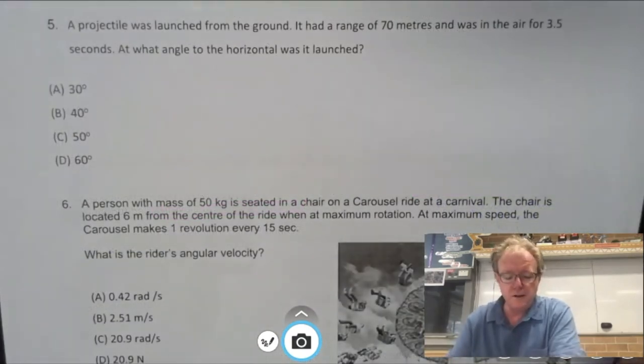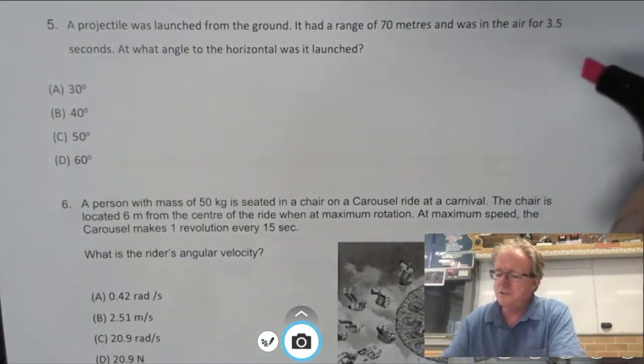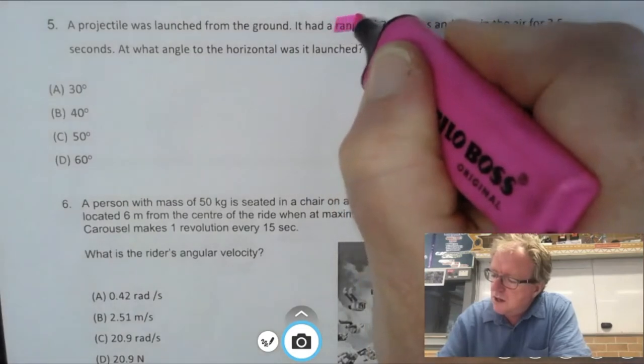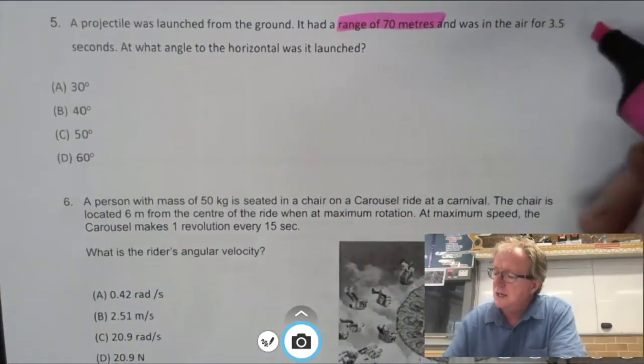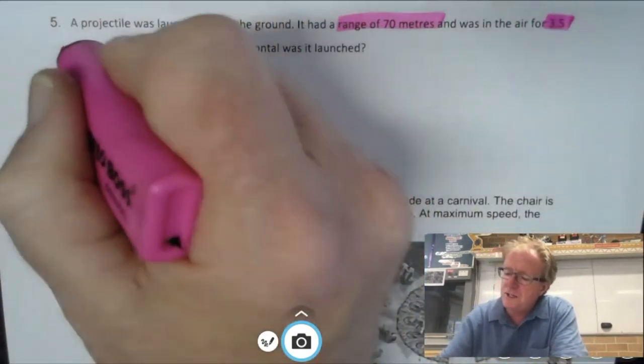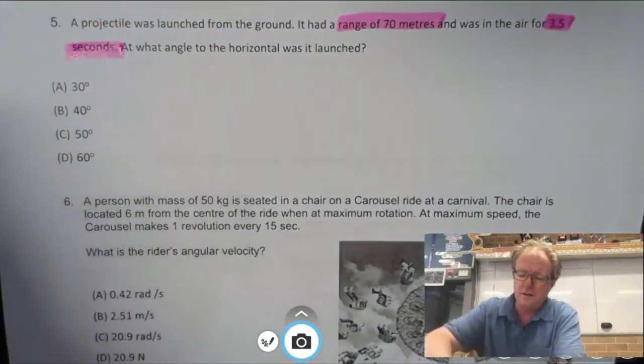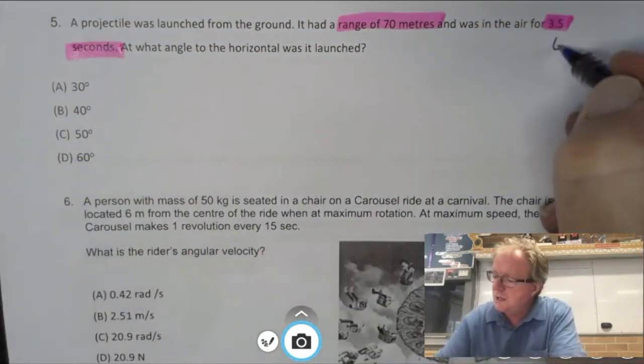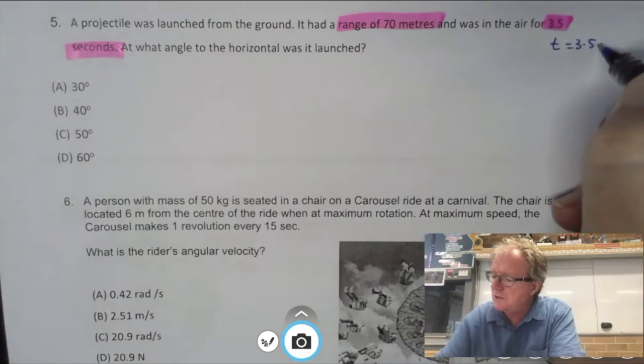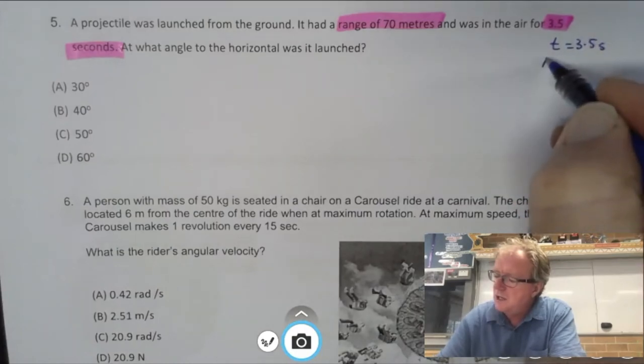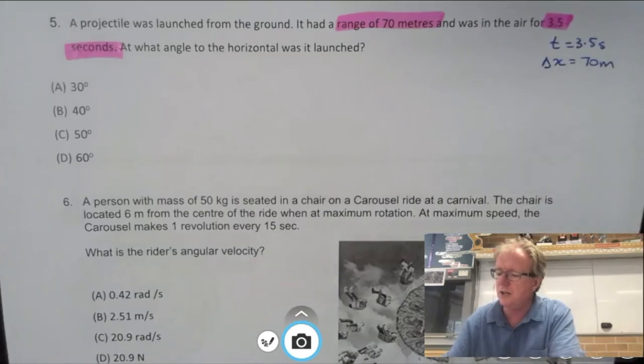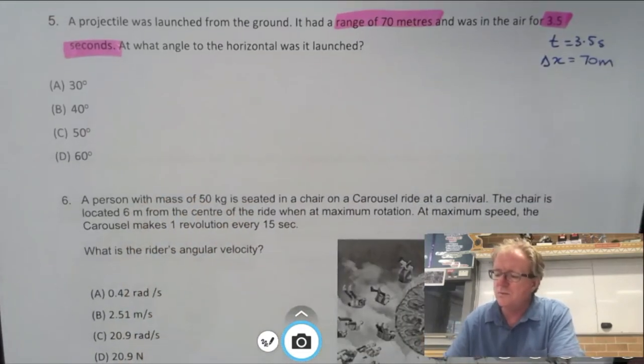Here we go with number five. A projectile was launched from the ground. It had a range of 70 metres, so let's highlight range, 70 metres. And it was in the air for 3.5 seconds - that's time of flight. So let's put that there. Time is 3.5 seconds and the range, change in x value, is 70 metres. What is the angle to the horizontal that was from launch?